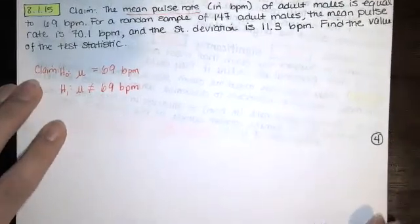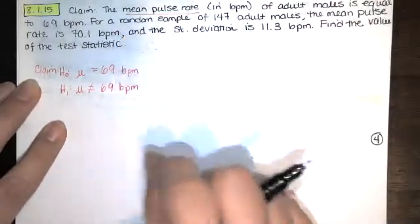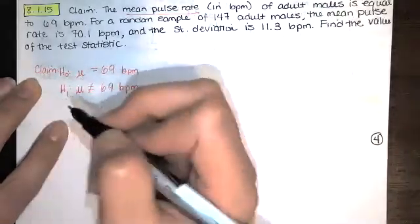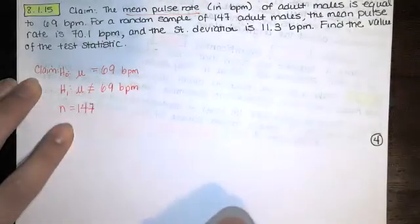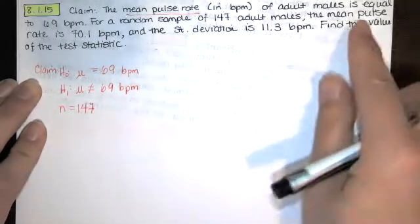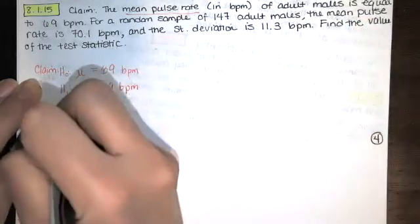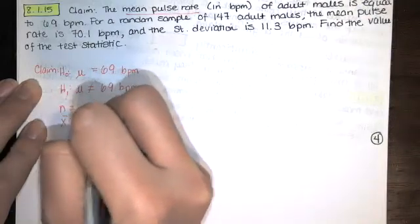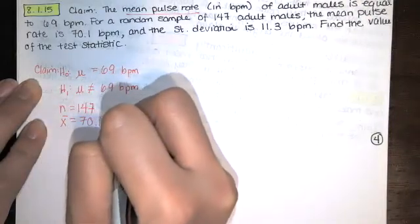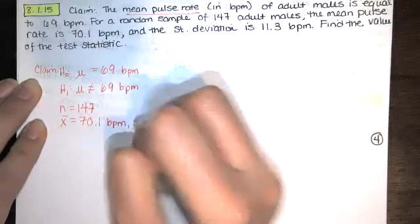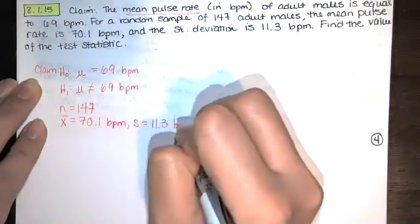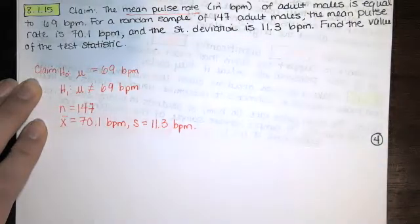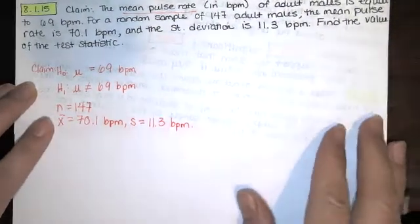Now let's look at the sample data that we have. We're told that we have a random sample of 147 adult males, so that's our sample size n=147. And we're told that their mean pulse rate x-bar is 70.1 beats per minute, and the standard deviation for that sample s is equal to 11.3 beats per minute. Now we're asked to find the value of the test statistic.